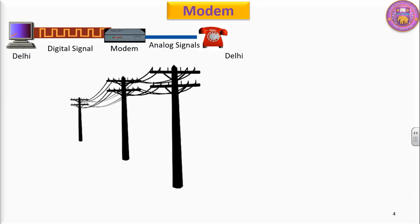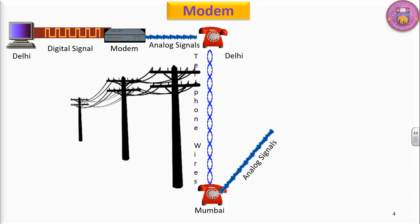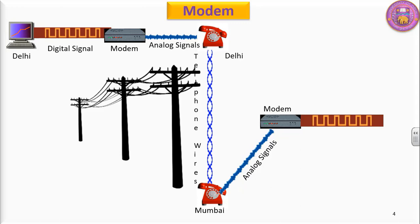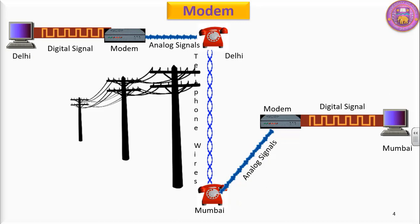Now we know that there are telephone wires. Through telephone wires, the signal reaches from Delhi to Mumbai. Again in Mumbai we have analog signals. Then we installed one more modem. This time the modem converts the analog signal into digital signals, and these digital signals are transmitted to the computer which is at Mumbai. So we started communicating from Delhi PC to Mumbai PC with the help of this modem.